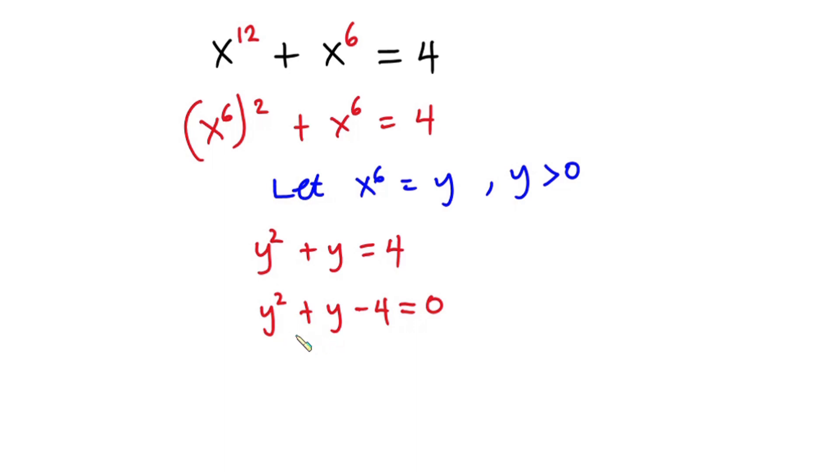So what I'm going to do is use the quadratic formula to solve it. So we have y is equal to negative 1 plus or minus square root of 1 minus 4 into 1 into negative 4, all divided by 2 times 1.